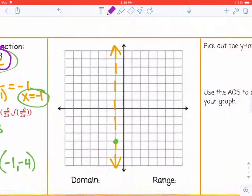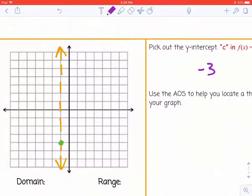Picking out our y-intercept is just that last number in our function, the constant term. So -3 is our y-intercept. That helps us go down 3 to put that on the graph.